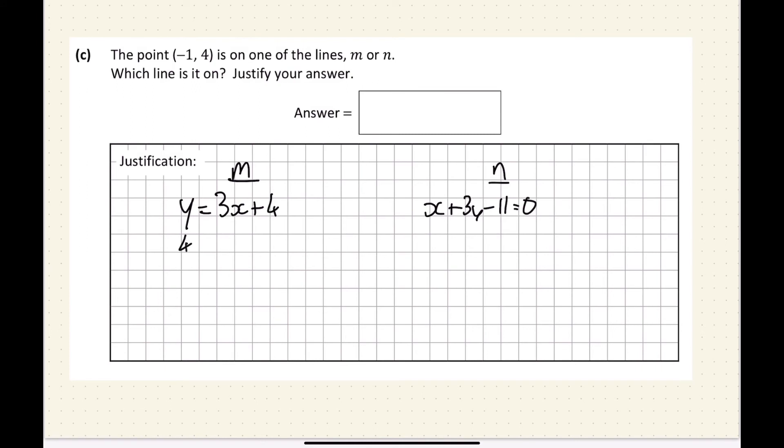So y equals 4 equals 3 multiplied by minus 1 plus 4. 4 equals minus 3 plus 4. 4 equals 1. Well, that's not true. So 4 does not equal 1. Therefore, it's not on m. So let's see if it's on n.